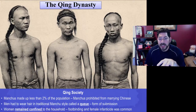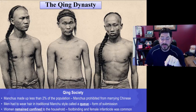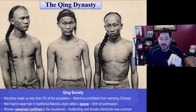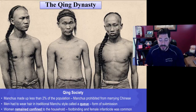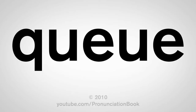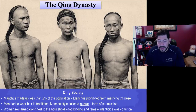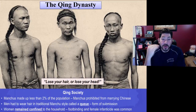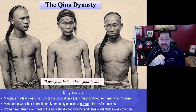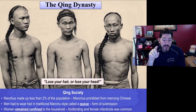Another problem the Qing Dynasty faced was that the Manchus were only 2% of the population. How does 2% of the population control all of China? They had certain ways. Number one, they wanted to recognize who was on their side and who wasn't. So they forced the Chinese people to wear a hairstyle called the Queue — the shaved forehead with the long pigtail. It was either lose your hair or lose your head. This was a physical way of seeing who was on their side and who wasn't.